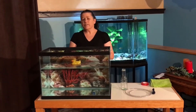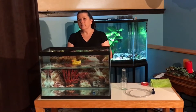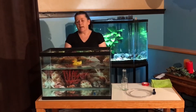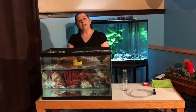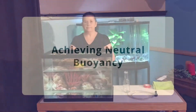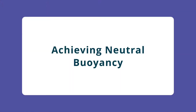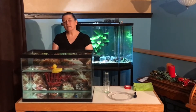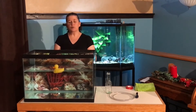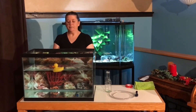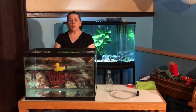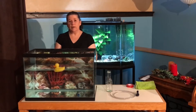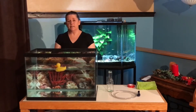Fish are denser than water, so why don't they sink? And how are they able to move up and down in the water column? There are four ways to achieve neutral buoyancy. The first is to incorporate low-density compounds into your body, such as fats.